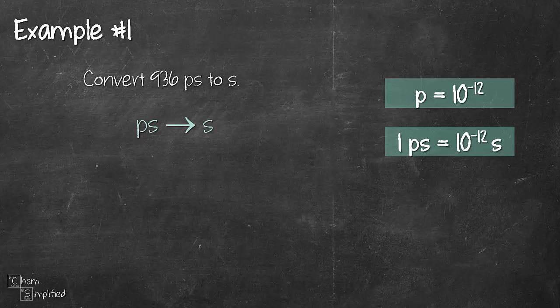So we're trying to convert picosecond to second. Now that we know the conversion factor we can easily convert. Start with what is given which is 936 picosecond. Multiply. Draw a line across. Place the unit that you want to get rid of at the bottom which is picosecond and then place the unit that you want which is second on the top. Picosecond will cancel each other off.